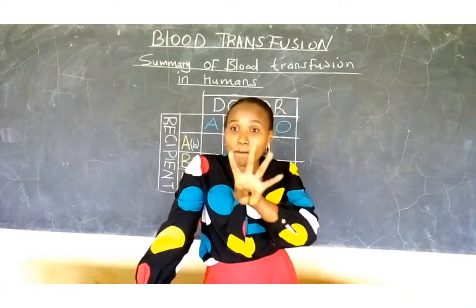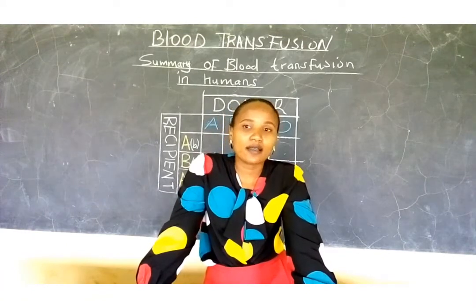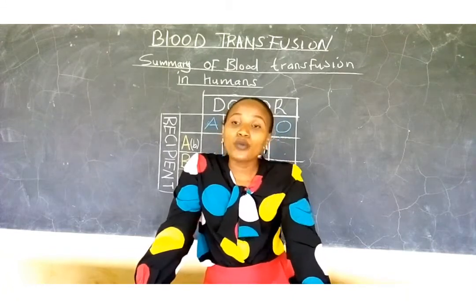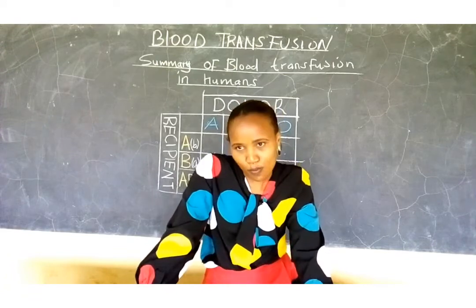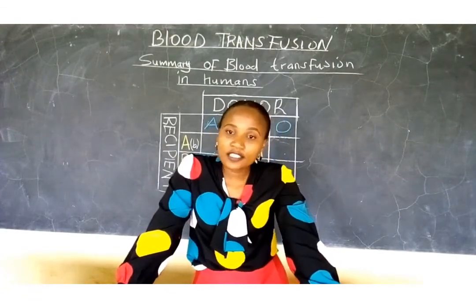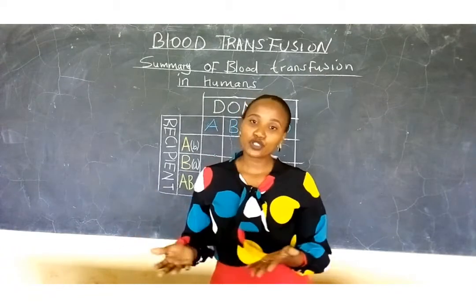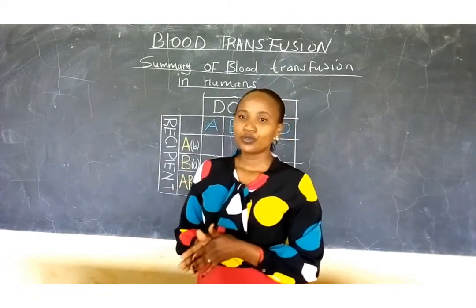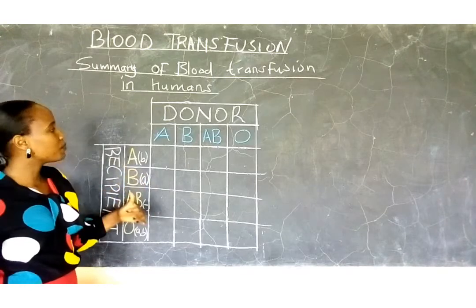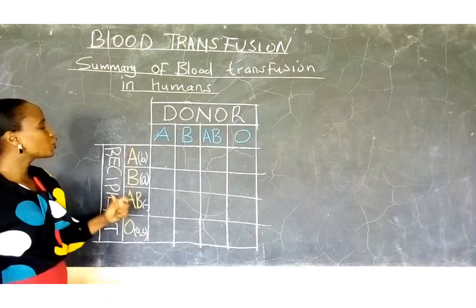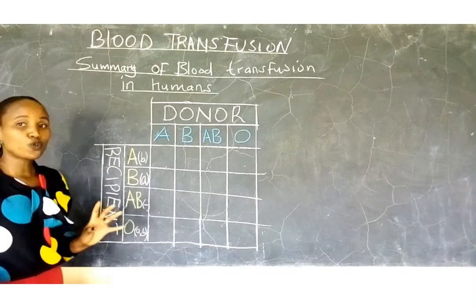Research has indicated that out of four people, one person requires blood transfusion — and those are a lot of people. Blood transfusion is successful when the recipient accepts the donated blood without a complication, that is, if the recipient cannot produce antibodies corresponding to the donor's antigen. Transfusion becomes successful if the donor's antigen is not agglutinated by the antibodies in the blood plasma of the recipient.